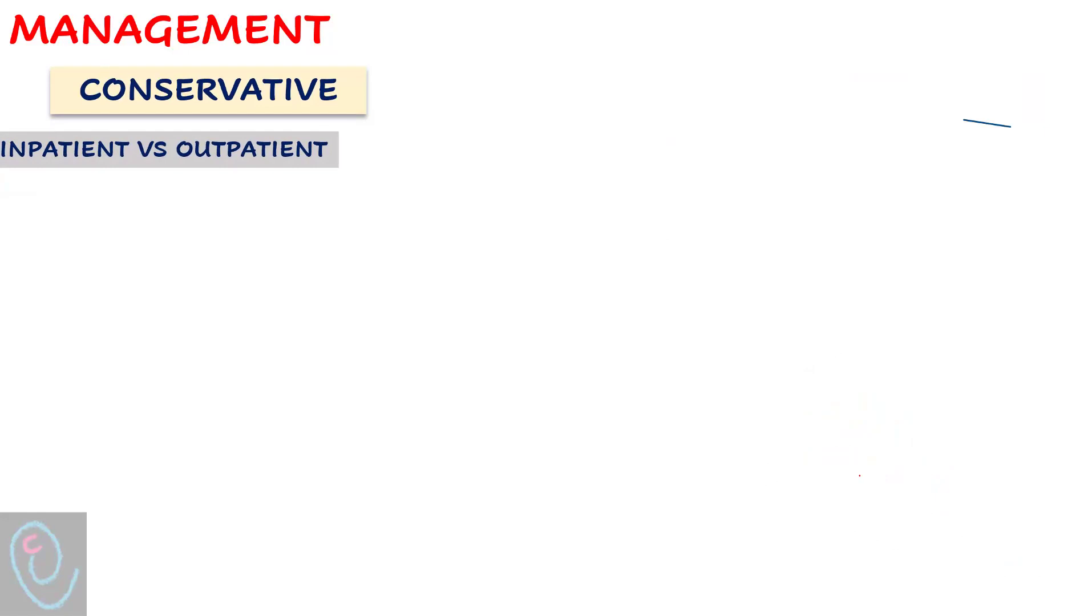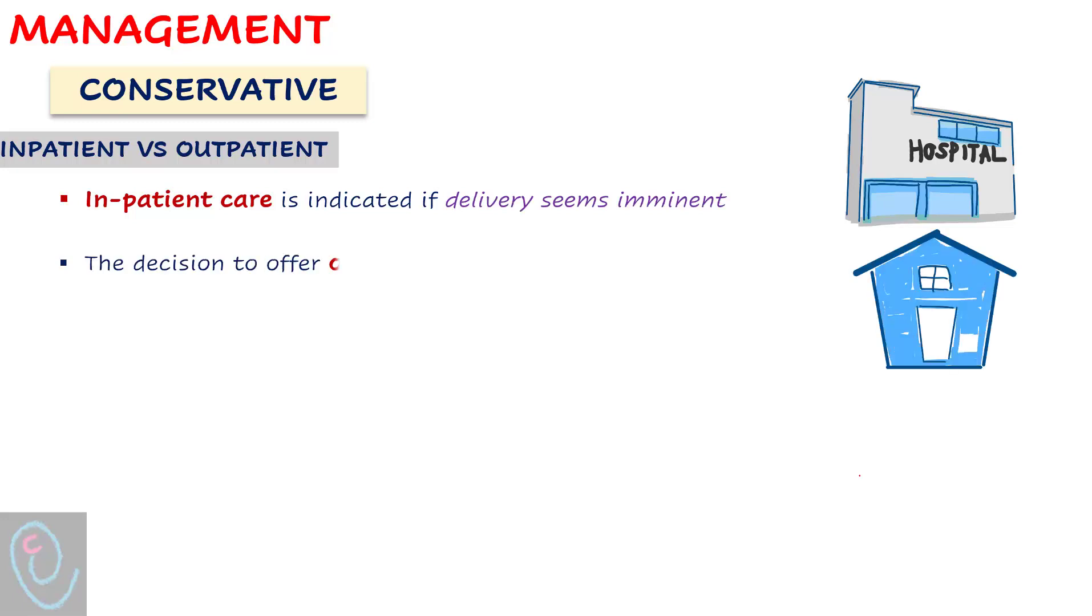Inpatient care is indicated if delivery seems imminent. The decision to offer outpatient care should be individualized, taking into account past obstetric history, support at home, distance from hospital, and markers of delivery latency.